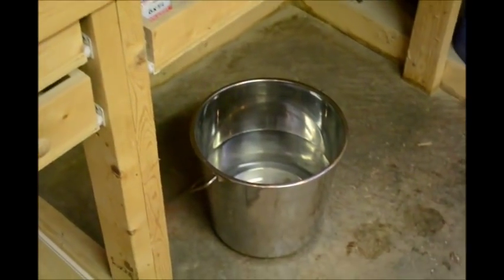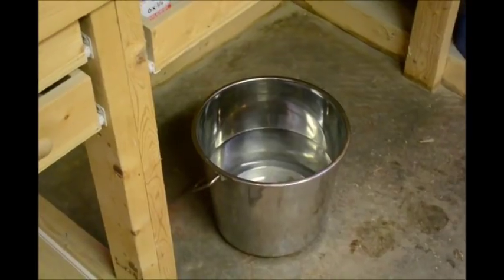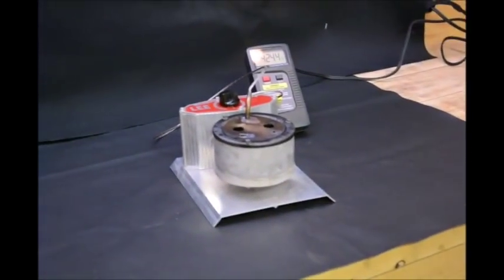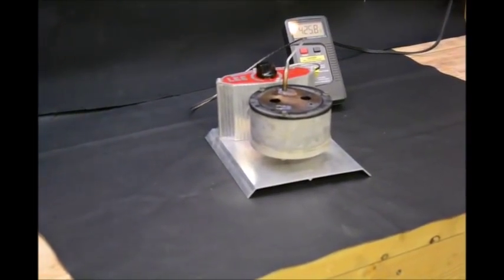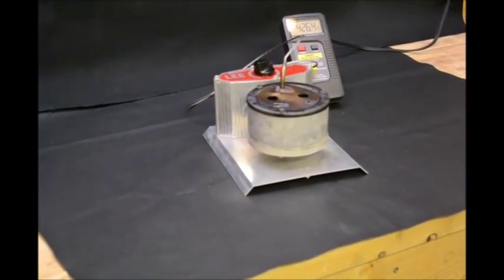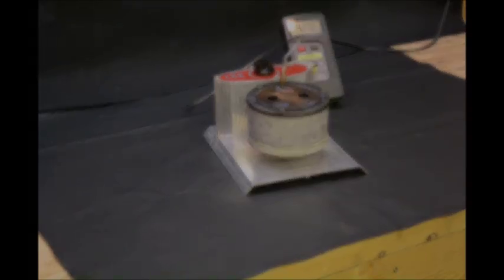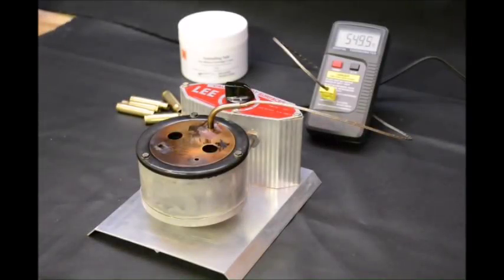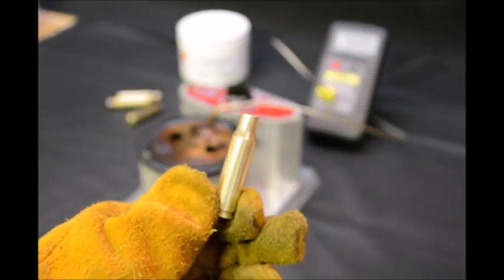Once the annealing pot is set up, a container of water is set below the bench in such a way that no splashes of water can reach the pot. Hot cases will be placed in the water to dissolve any residual salt that sticks to the case and to cool the cases quickly so that they can be handled immediately. A pile of cases placed conveniently close to the pot is then all that is needed to begin.